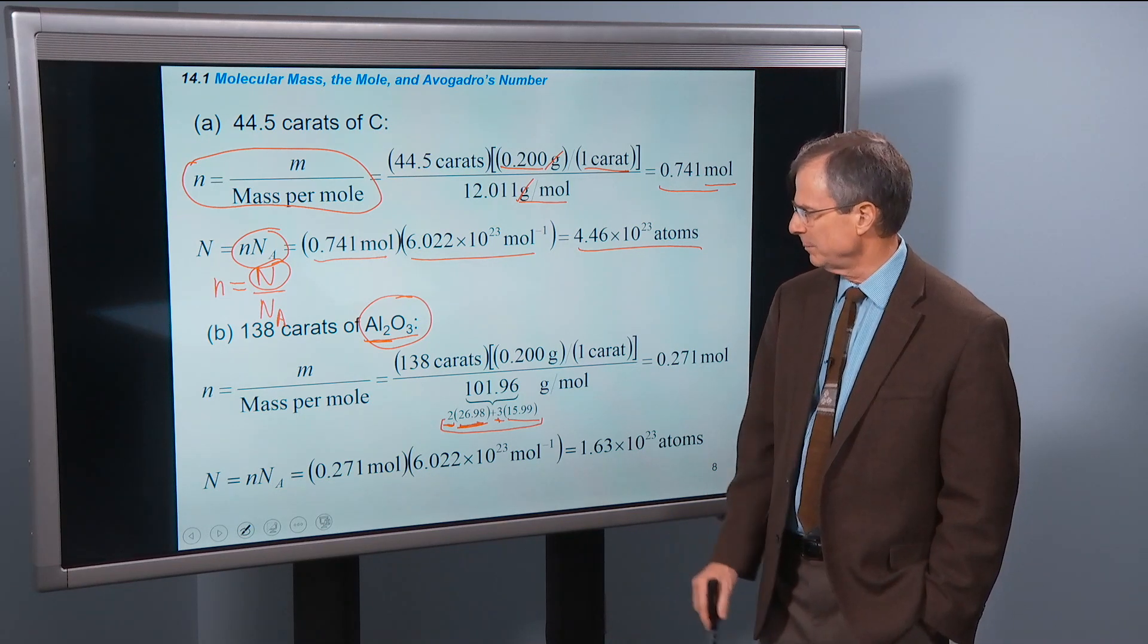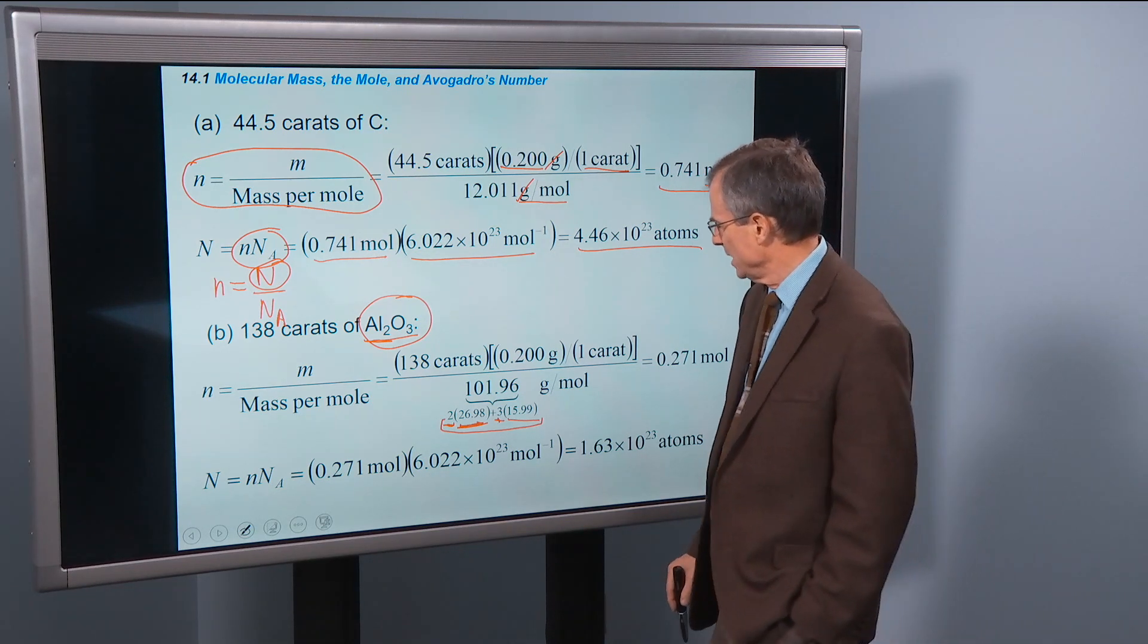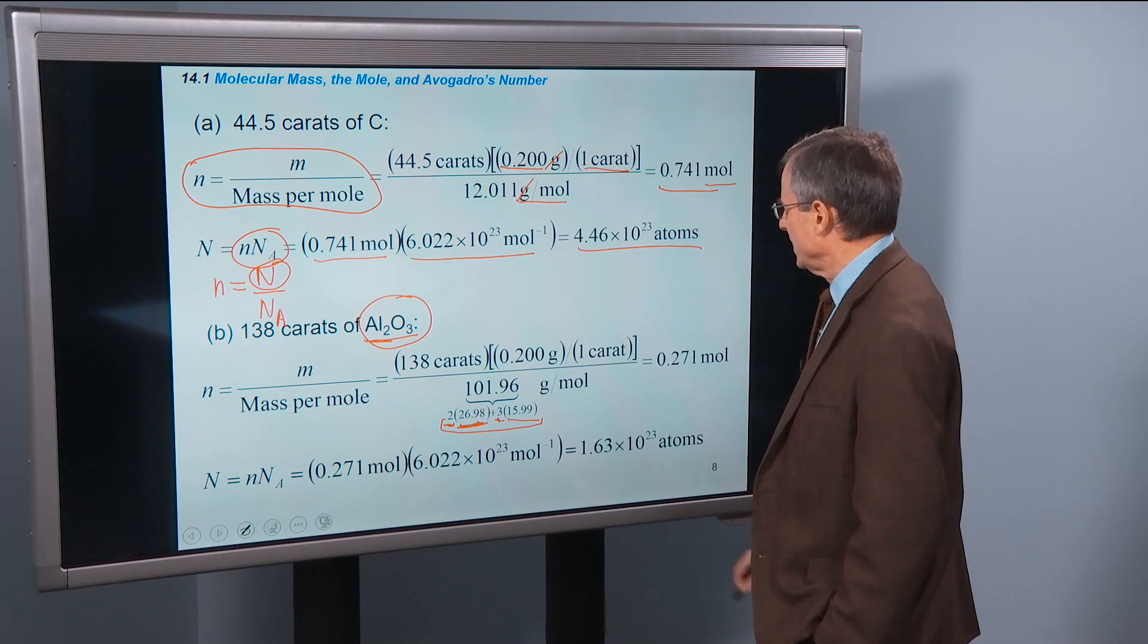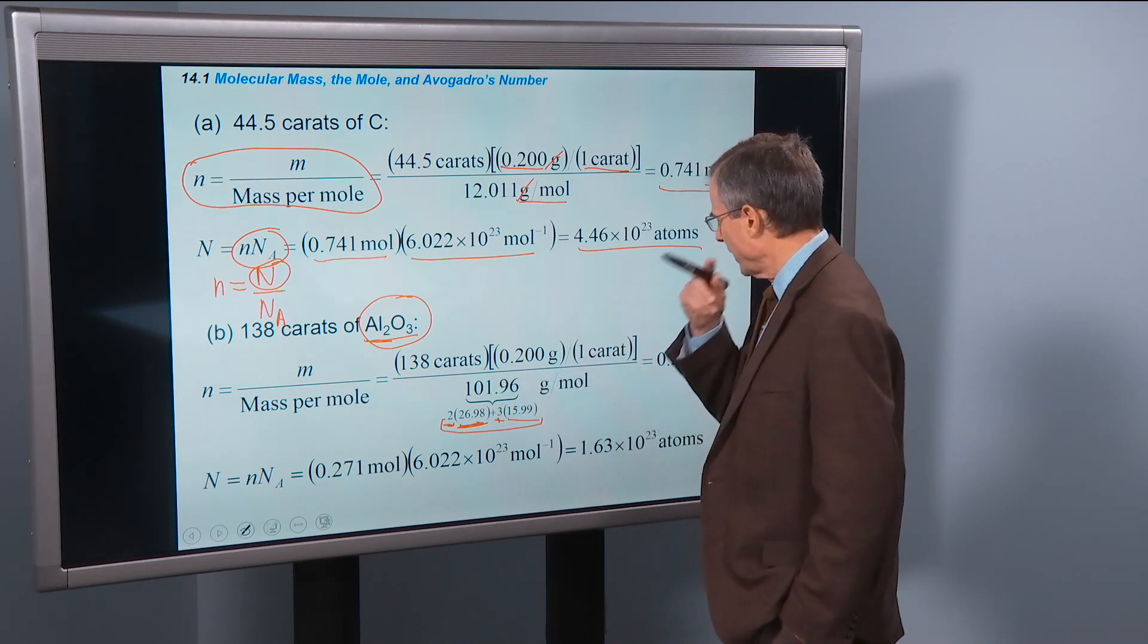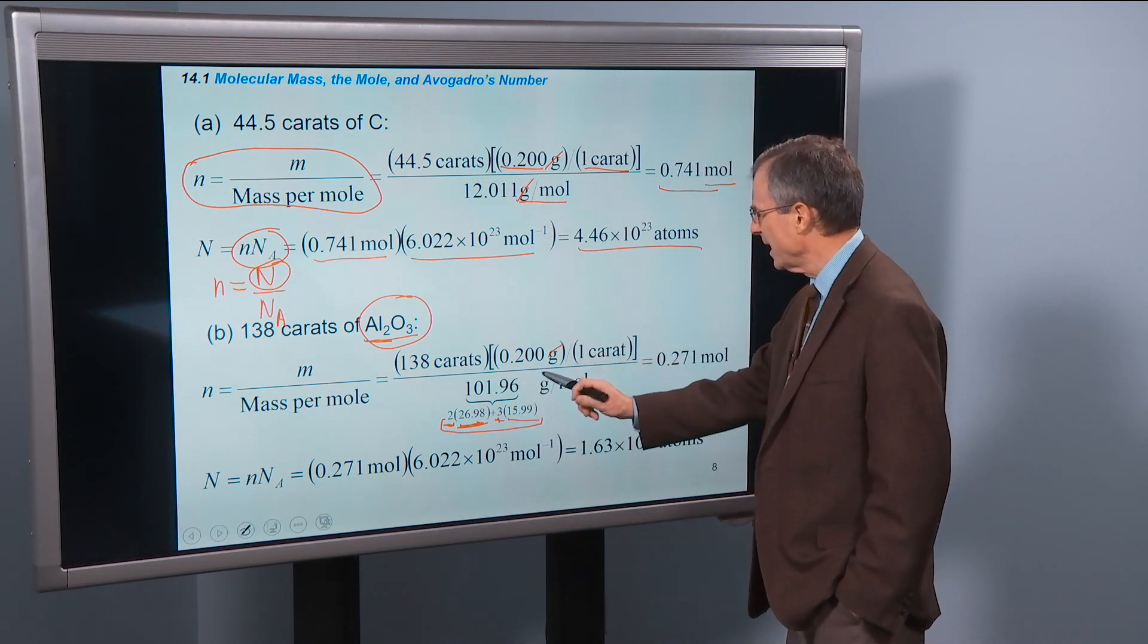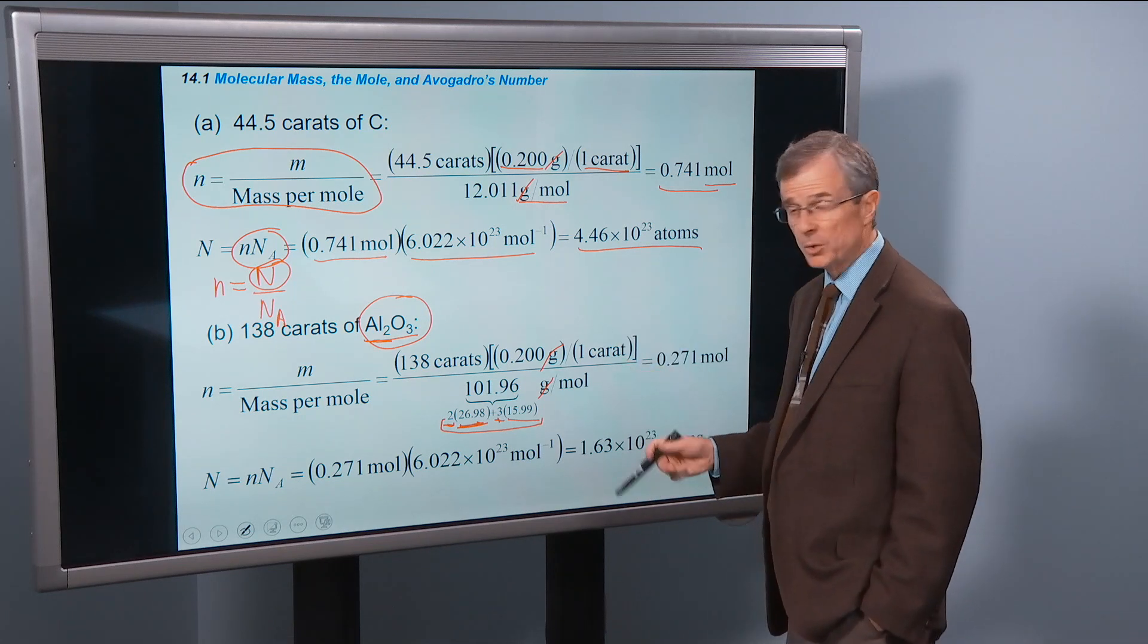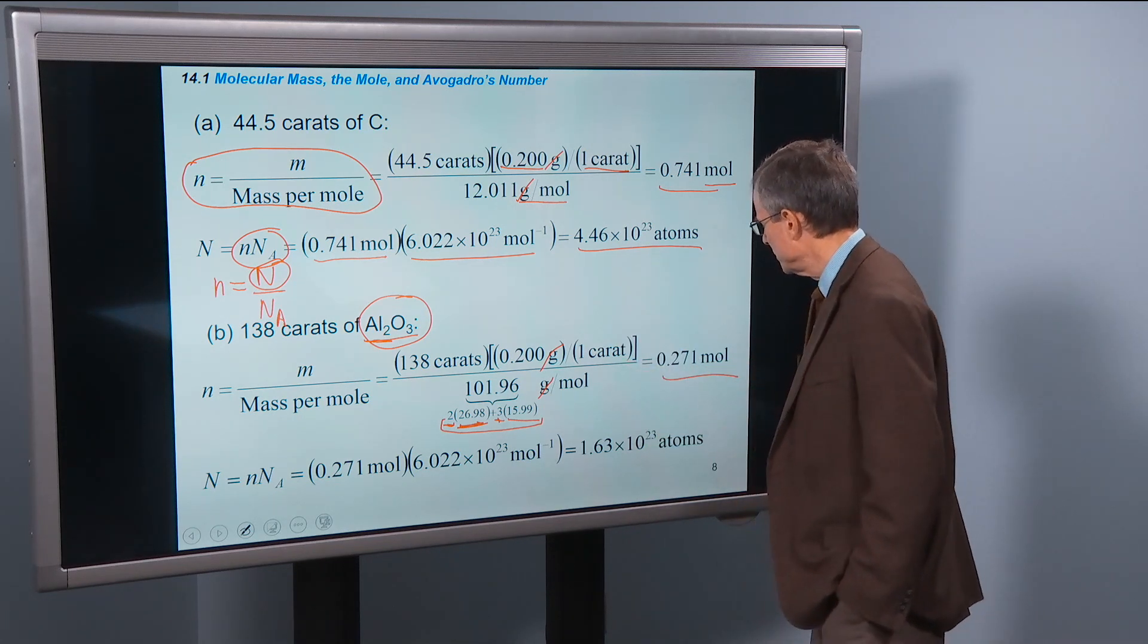So that's in the denominator, the number of grams per mole. Again, the grams cancel, we get 1 over 1 over mole, we end up with 0.271 moles.